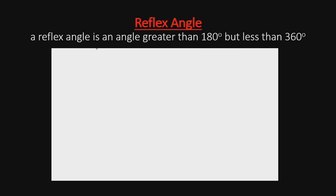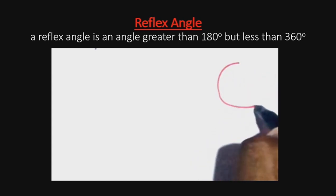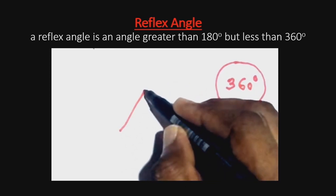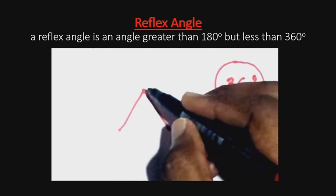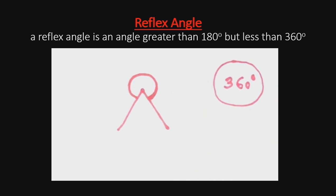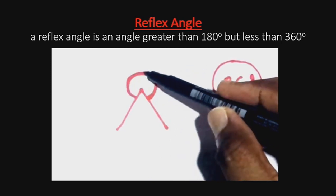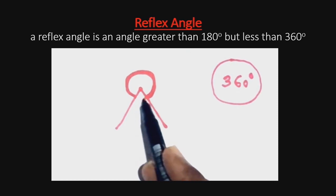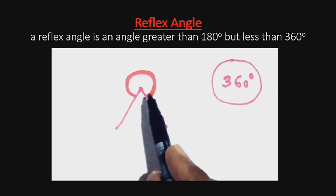The next angle we are considering is a reflex angle. A reflex angle is an angle that is greater than 180 degrees but less than 360 degrees. A complete revolution gives us 360 degrees. When an angle is less than a complete revolution but greater than 180 degrees, like this example here, that angle is a reflex angle. For it to complete a revolution, you need to pass in between these two lines and join together, so it is a reflex angle.